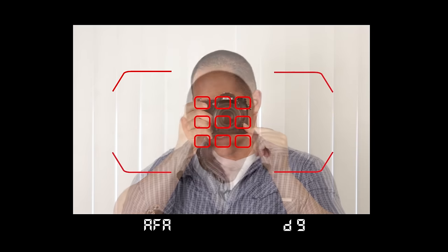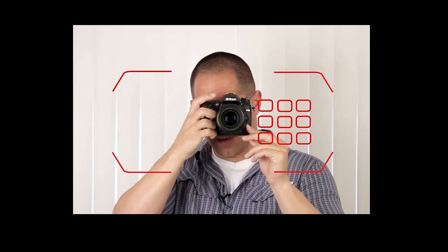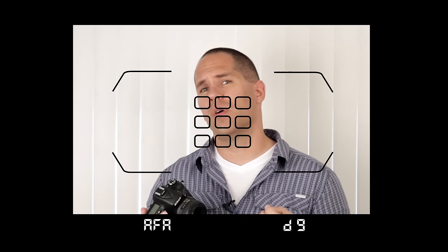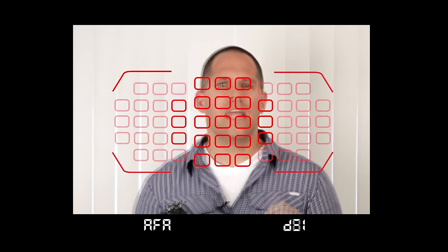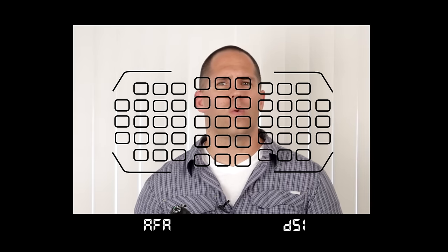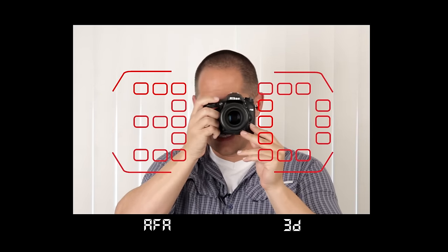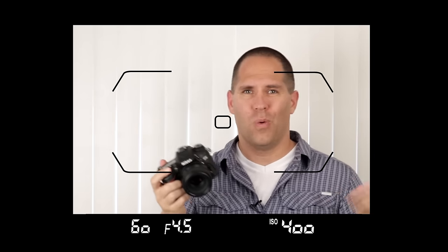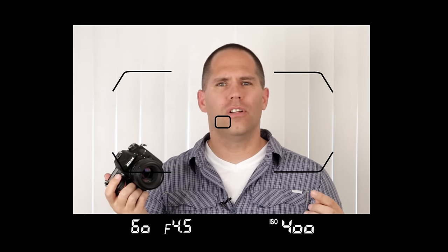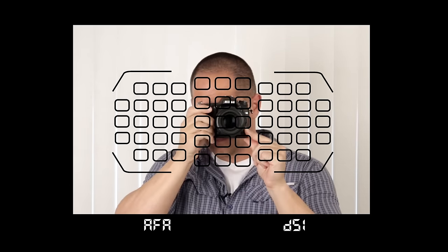The next focusing type is D9, and it allows us to select nine focusing squares clustered together. You can also move these around. D9 is going to be better for tracking up close sports subjects. D21 allows us to select clusters of 21 focusing squares, and D51 selects all of the focusing squares. Essentially, what we're doing is we're giving the camera permission to look in different areas if we lose focus. We're giving the camera permission to look in the surrounding squares if we lose focus on that single square. D21 would expand this area, and D51 would open it up all the way, which I never use.